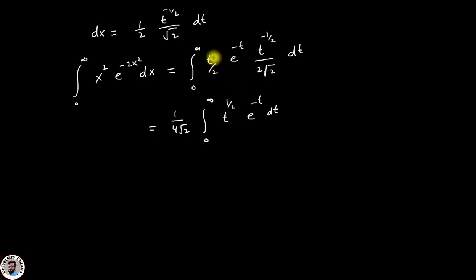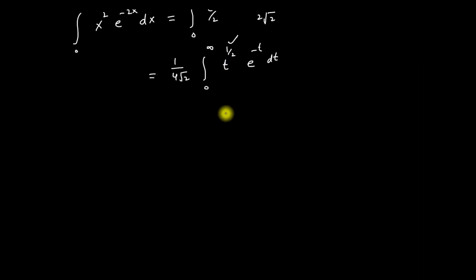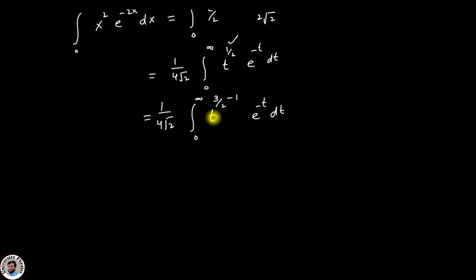This integration can be rewritten by noting that t to the power 1 times t to the power minus half gives t to the power half, since 1 minus half equals half. Combining the constants gives a factor of 4, so we get 1 over 4 root 2 times the integration from 0 to infinity of t to the power (3/2 minus 1) e to the power minus t dt. Note that 3/2 minus 1 equals 1/2, confirming the exponent.